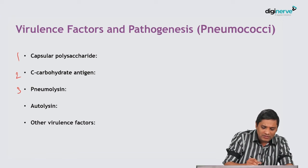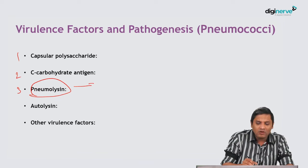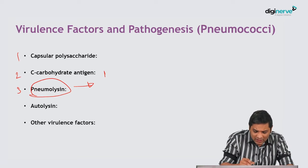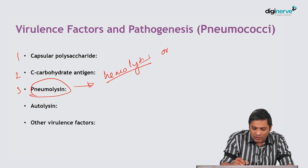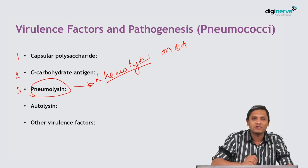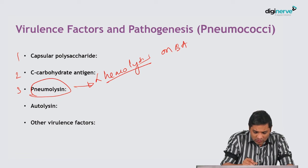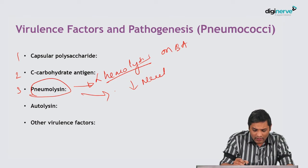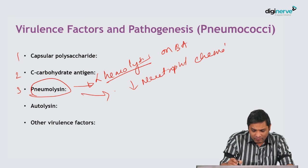The next virulence factor is pneumolysin. Pneumolysins are the virulence factor responsible for alpha hemolysis of pneumococcus on blood agar. Additionally, pneumolysin helps in inhibiting neutrophil chemotaxis as well as inhibiting phagocytosis.